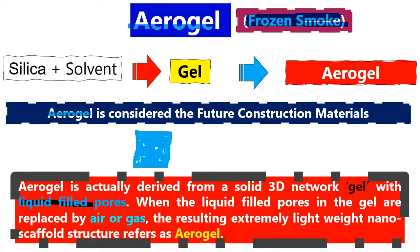Gel is derived from a solid 3D network — the holes or pores are filled by liquid. Now, how do we get aerogel? It's very simple. When we remove the liquid — the water, whatever you call it — from the pores and fill those pores with air or gas, we give the name 'aerogel' to the resultant material.